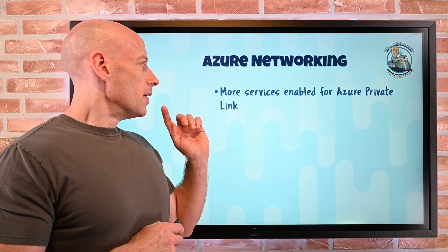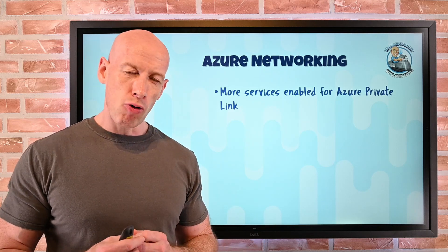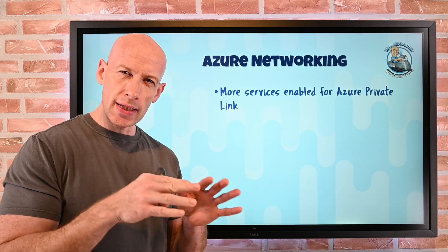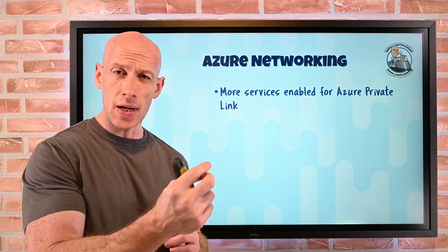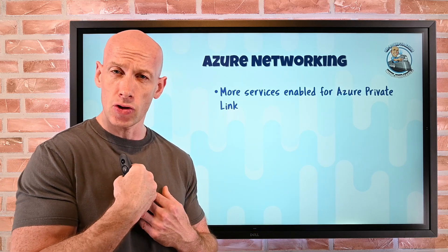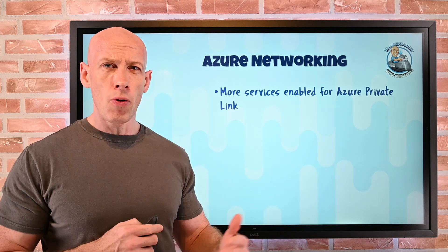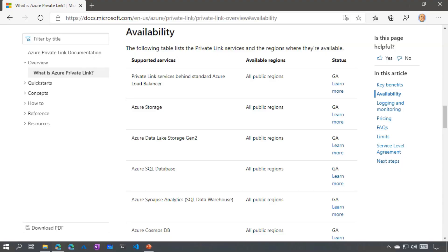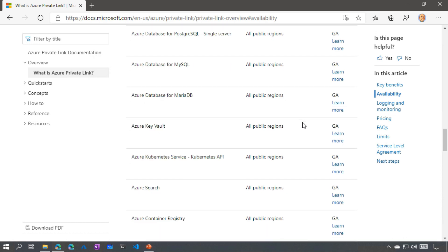On the networking side, even more services are now Private Link enabled. Private Link is the ability to take a PaaS service and project it into our virtual network — it gets its own NIC and private IP from our address space, without anything public-facing. More and more PaaS services now support this, and the documentation lists all the services that support Private Link.